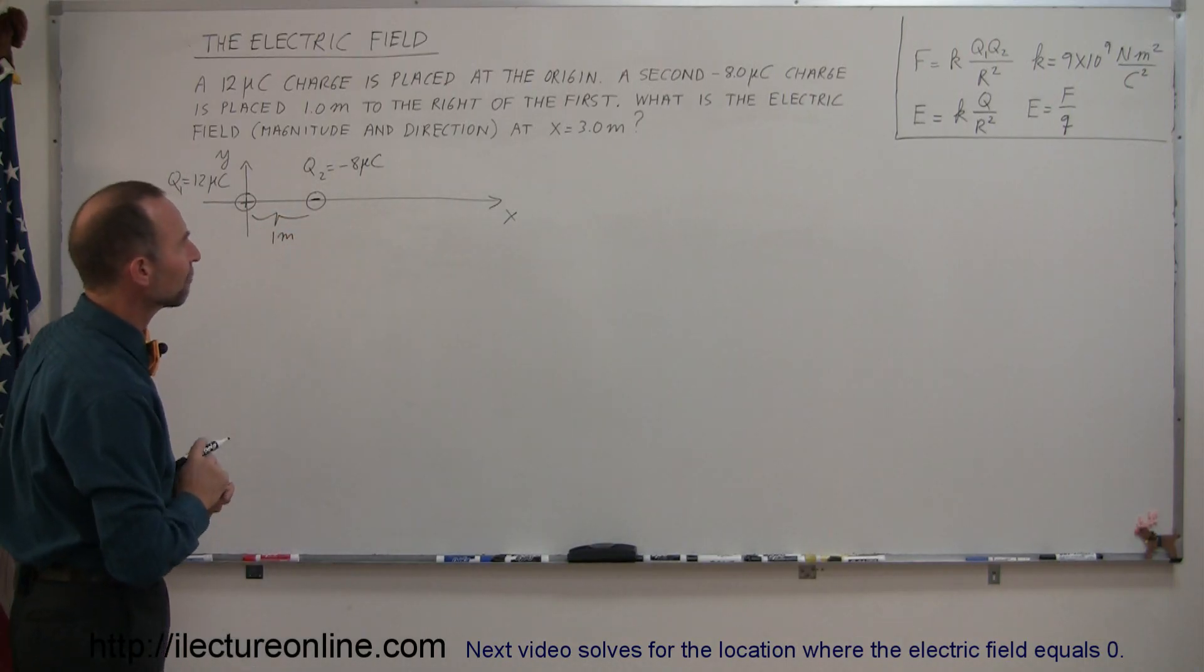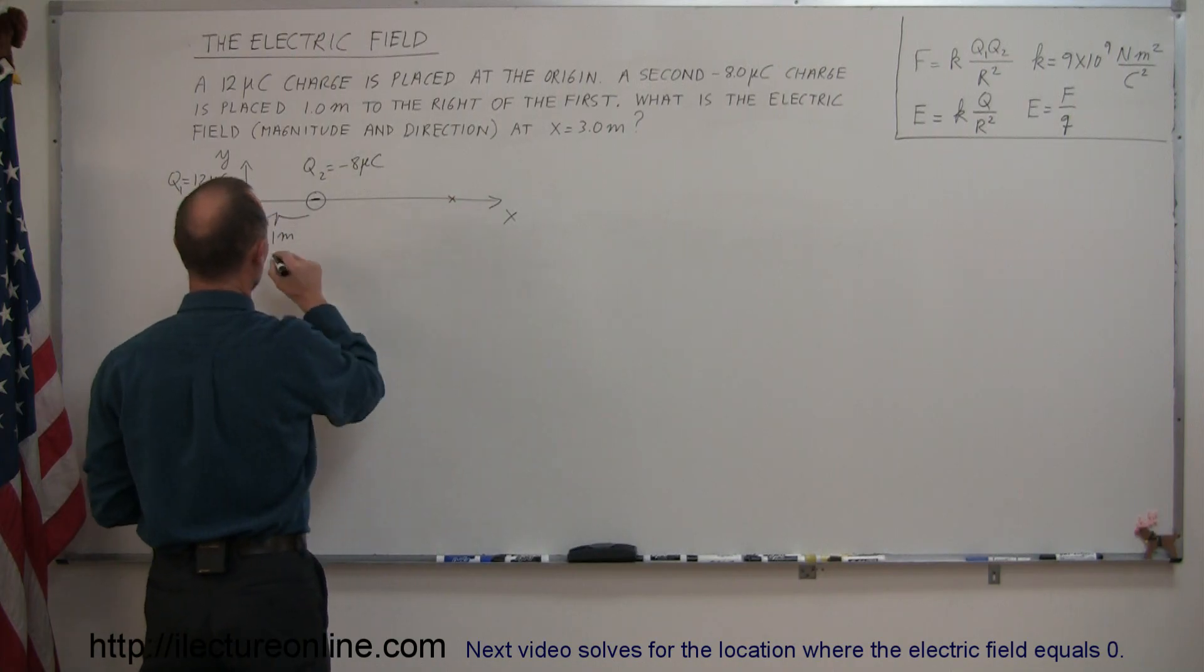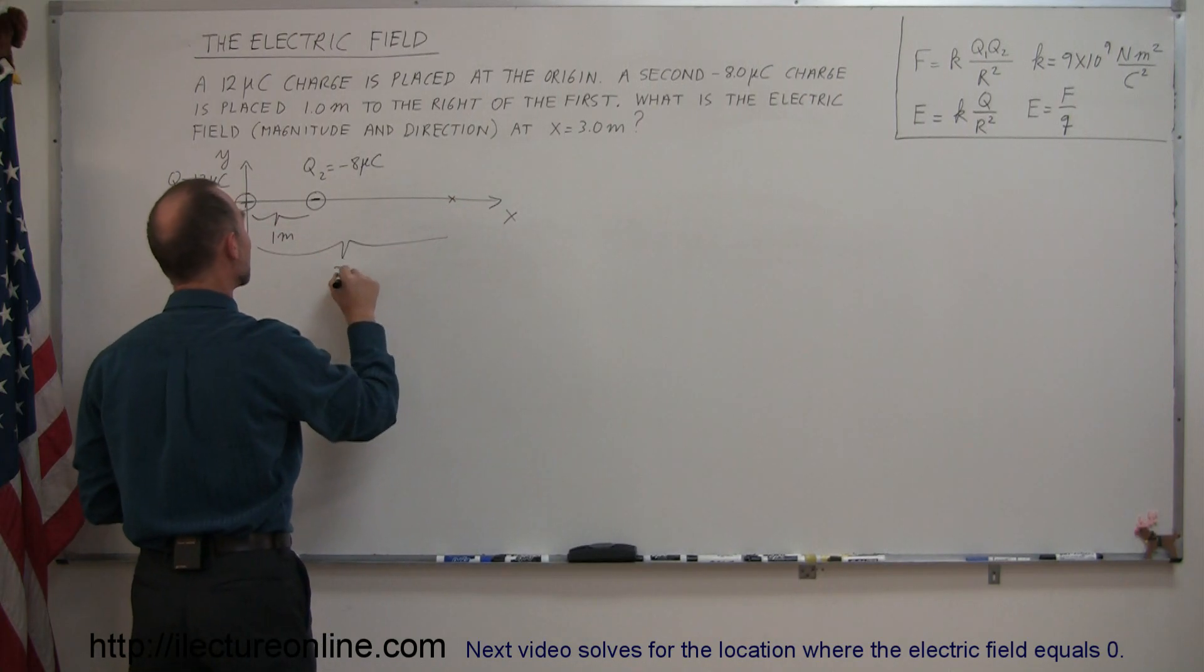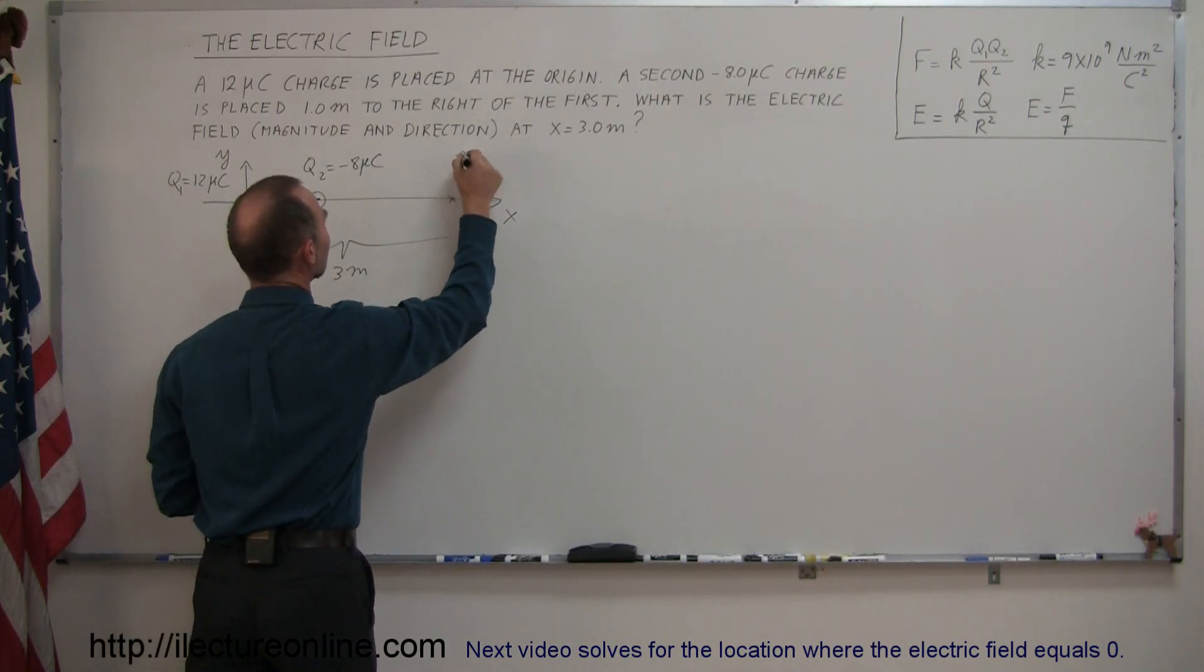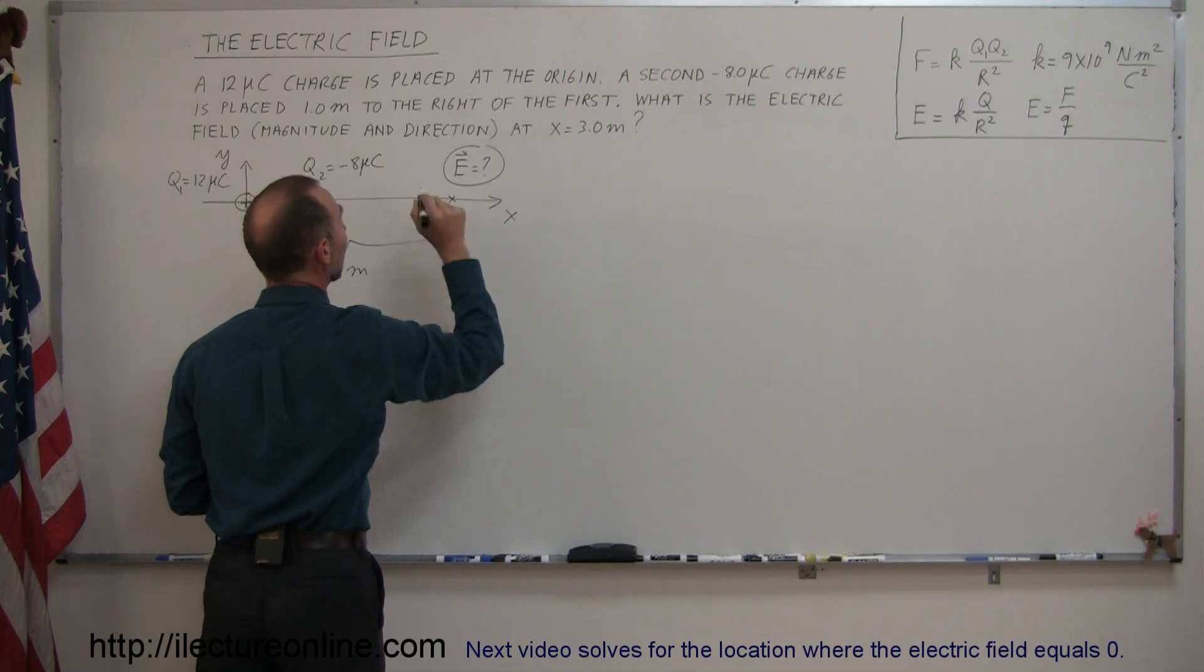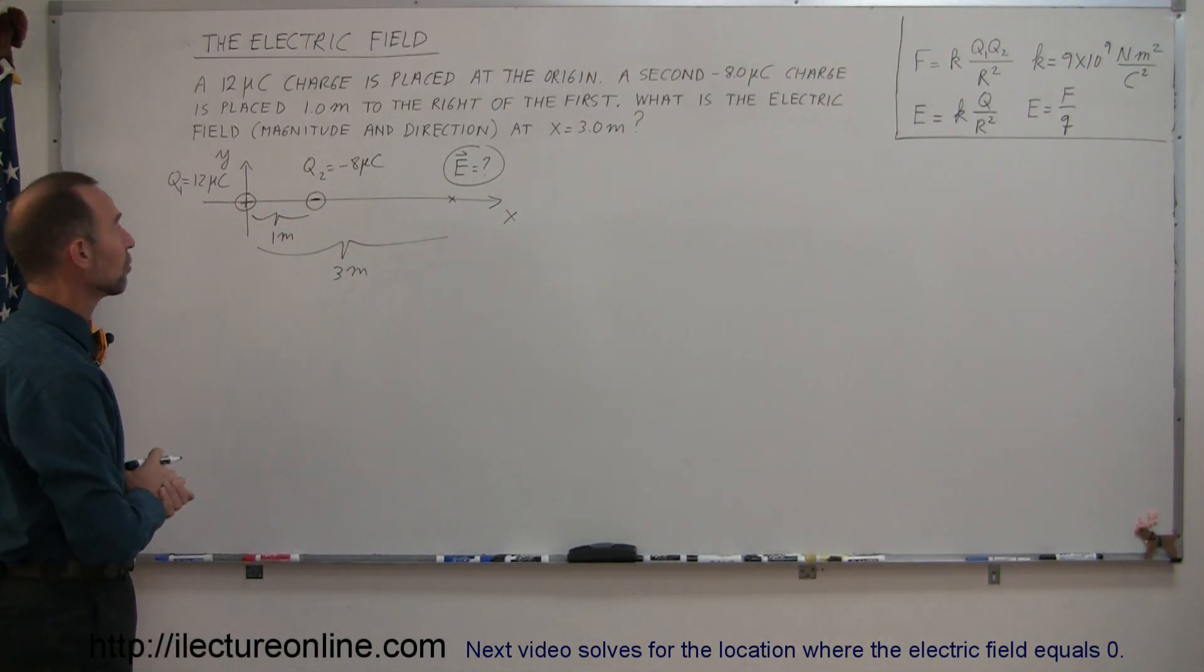Now we're interested in finding the electric field at this location right there. That's exactly three meters to the right of the origin. We want to know what the electric field is. Of course, electric field is a vector quantity, which means we have to find both magnitude and direction.